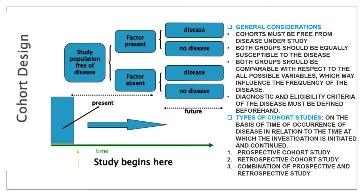In the cohort study design, the study population is free of the disease at the start. Two groups are identified: those with the risk factor and those without. Starting from the present, patients are kept on follow-up to observe the outcome. For those with the risk factor, either the disease occurs or it does not; similarly for those without the risk factor. You observe into the future to see disease frequency.